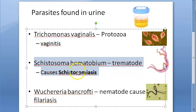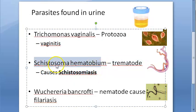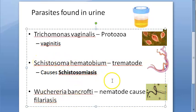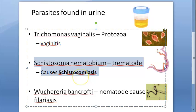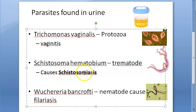Coming to the worms — helminths — you can find Schistosoma haematobium, which is a trematode. It causes schistosomiasis.